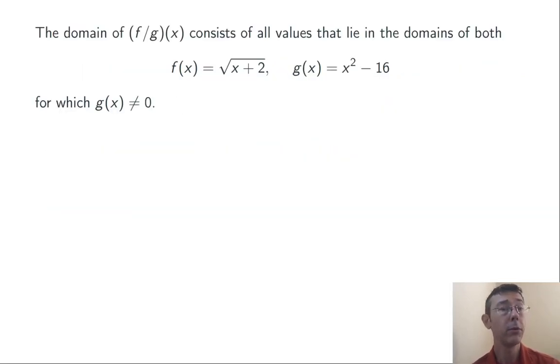So that's also going to be a restriction on f over g of x. We're going to start with the set x greater than or equal to negative 2, and then remove from it any points that will make that denominator equal to 0. So our first task here is going to be to find when is g of x equal to 0. We need to solve x squared minus 16 equals 0. I solve that, for example, by factoring, and I get x equals plus and minus 4.